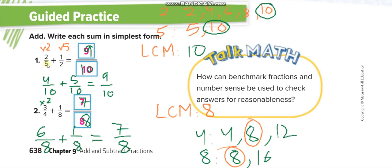Similarly, for 2/5 plus 1/2, the LCM of 5 and 2 is 10. We multiply the first fraction by 2: 2 times 2 is 4, and 5 times 2 is 10. We multiply the second fraction by 5 because 2 times 5 gives 10: 1 times 5 is 5, and 2 times 5 is 10. Now the denominators are both 10. We add the numerators: 4 plus 5 is 9, so the answer is 9/10. Remember, you cannot add fractions until the denominators are the same.